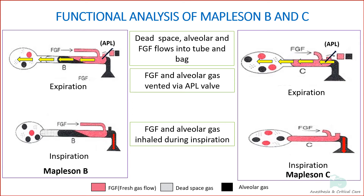As mentioned earlier, Mapleson B and C are unsuitable for both spontaneous and controlled ventilation. These circuits require a fresh gas flow of two to three times the minute volume to adequately flush alveolar gas within the circuit and prevent re-breathing.